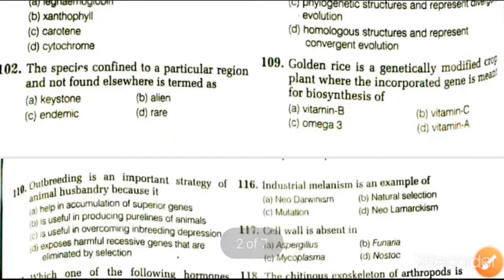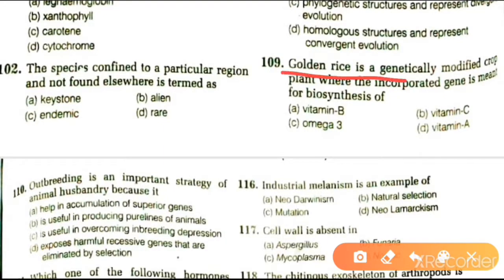Next question: golden rice is a genetically modified crop plant where the incorporated gene is made for biosynthesis of vitamin B, vitamin C, vitamin A, or omega-3. The answer is vitamin A, because golden rice is a variety of rice produced through genetic engineering to biosynthesize beta-carotene, a precursor of vitamin A, in the edible part of the rice.